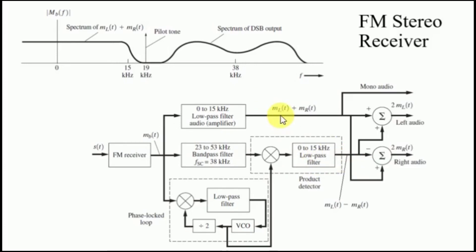We have ML of t plus MR of t in the upper branch and ML of t minus MR of t in the lower branch. If you add them, MR of t and MR of t would be cancelled. You would be left with ML of t plus ML of t that is 2 ML of t.